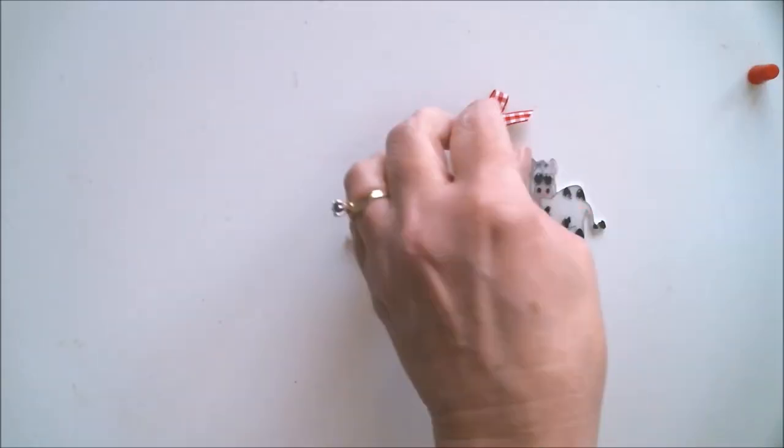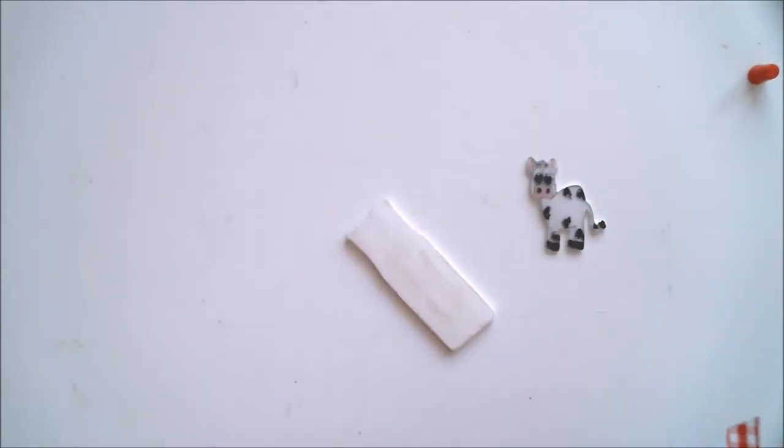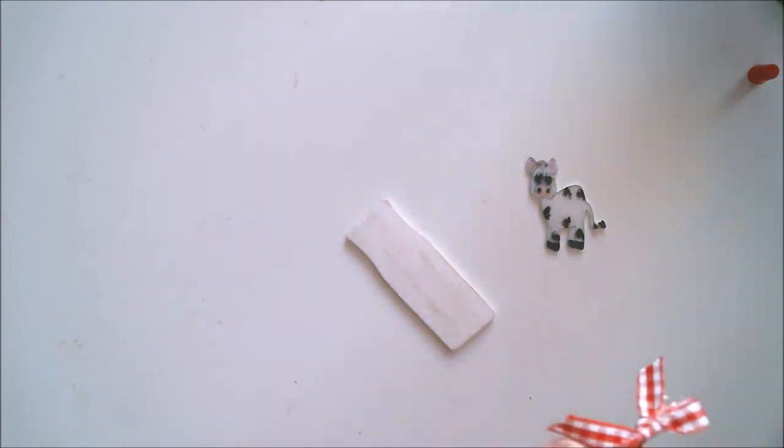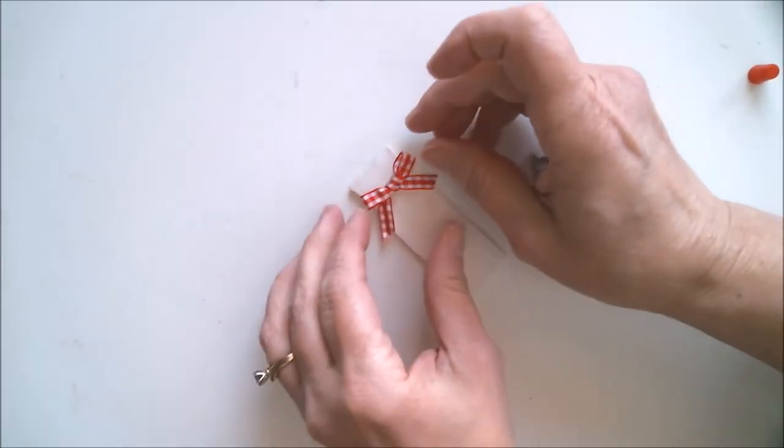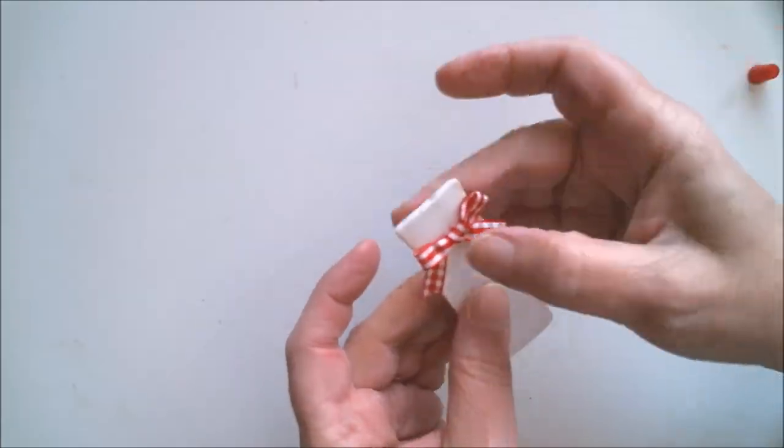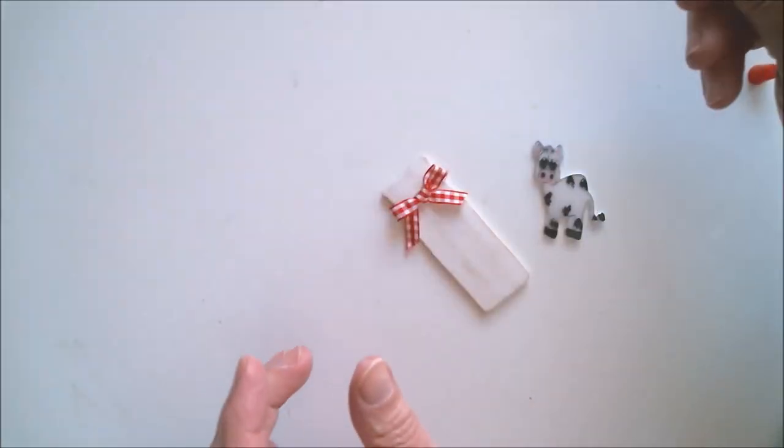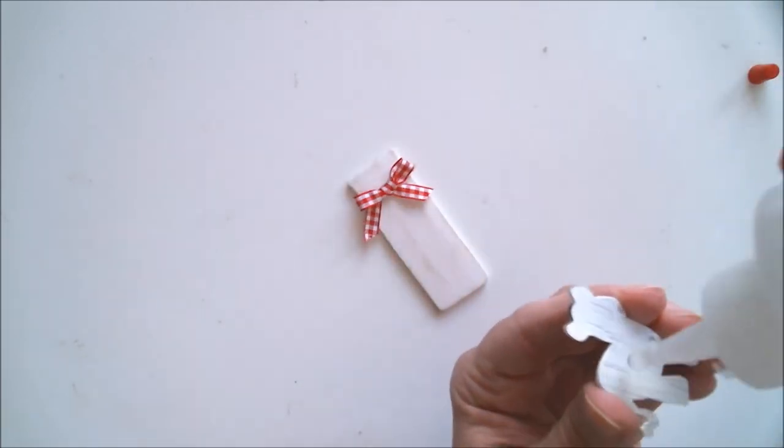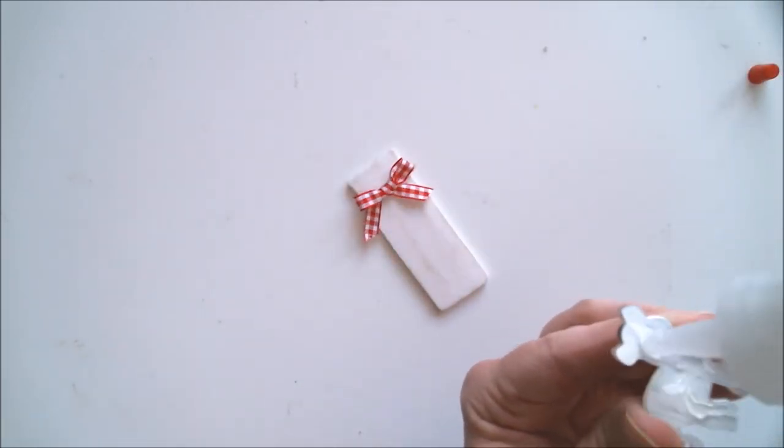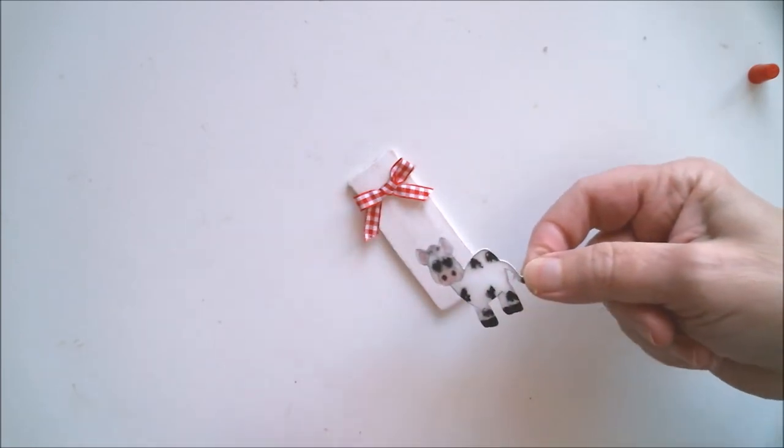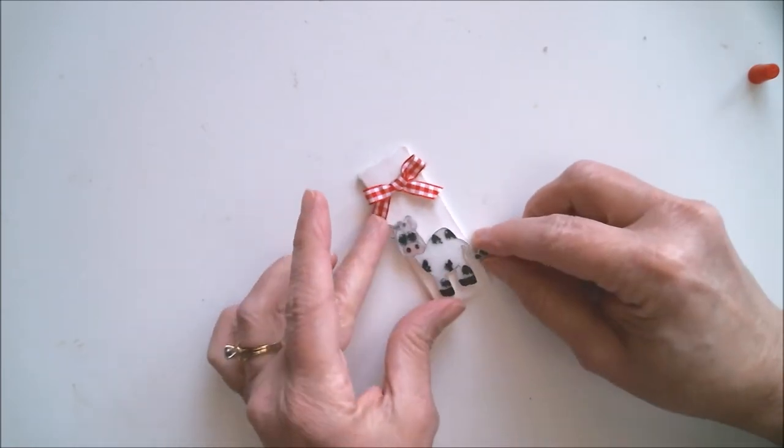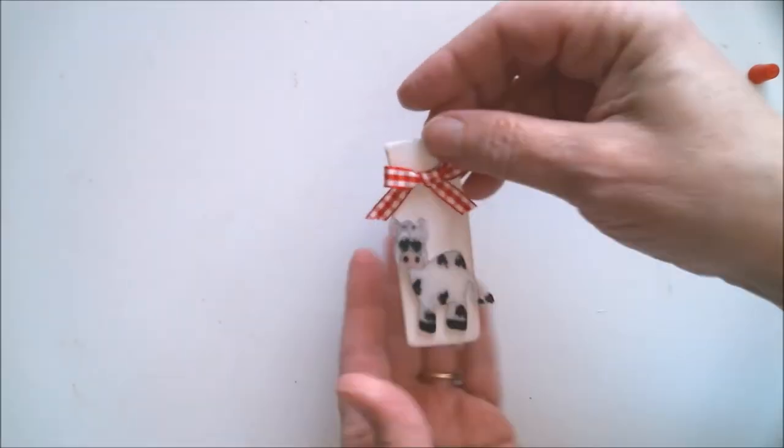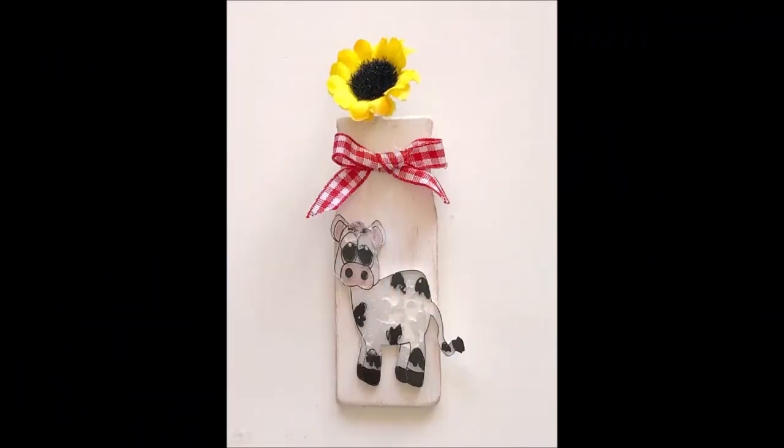And once that was done, I used my Beacon Fabri-Tac to glue on this red checkered bow and that cute little cow embellishment that I made years ago with shrink film. You all remember Shrinky Dinks, right? If you don't remember Shrinky Dinks, I think I actually made a video a long time ago using them, and if I did, I'll put a link below in the description box for you. So if you didn't already know this, I love cows and I live in cow country so I had to use this and I think it is going to be my favorite. Isn't that just cute?